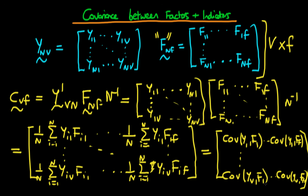So we can see that if we want to get the covariance between the factors and the indicators, all we need to do is take the factor score matrix and multiply it by the transpose of the indicator score matrix. What we get out in the end is a matrix which contains all the various covariances of the indicator variables with all of the factor variables.